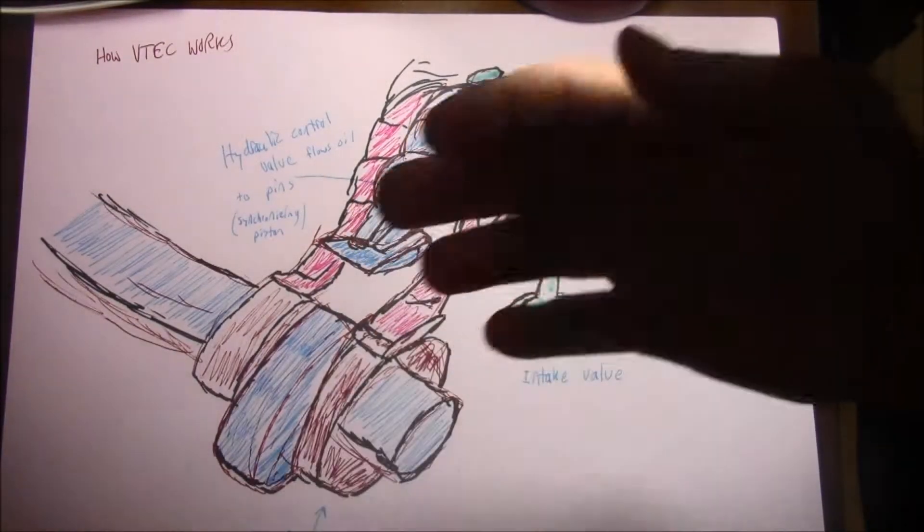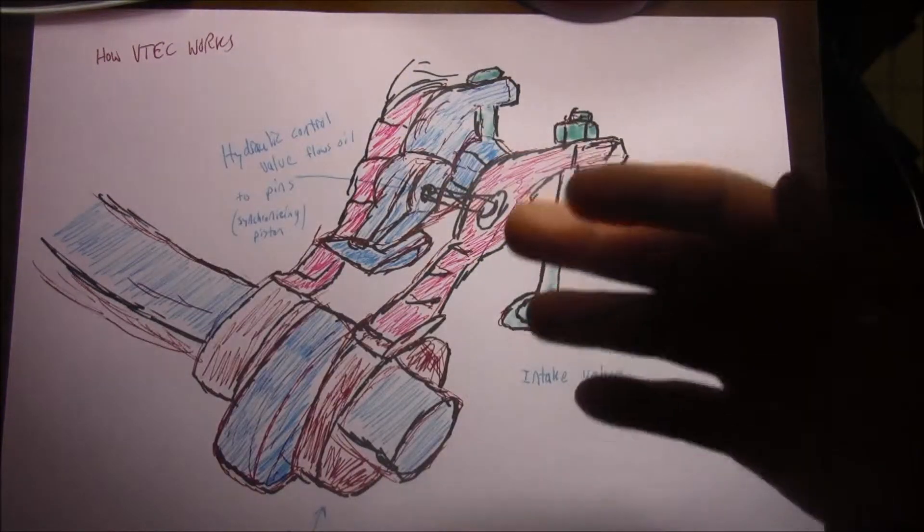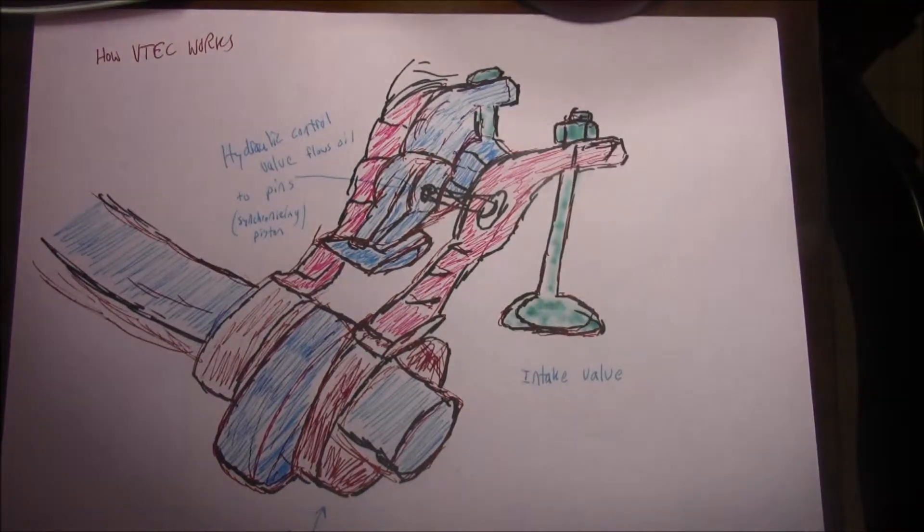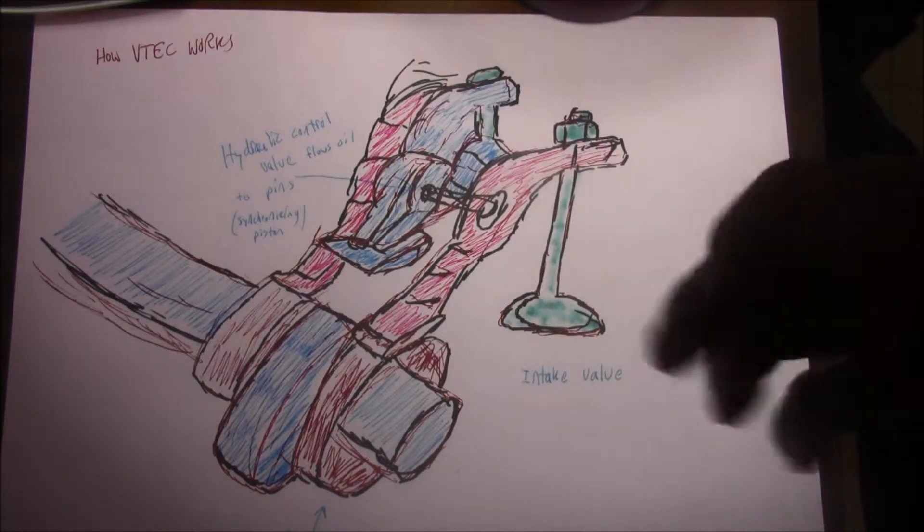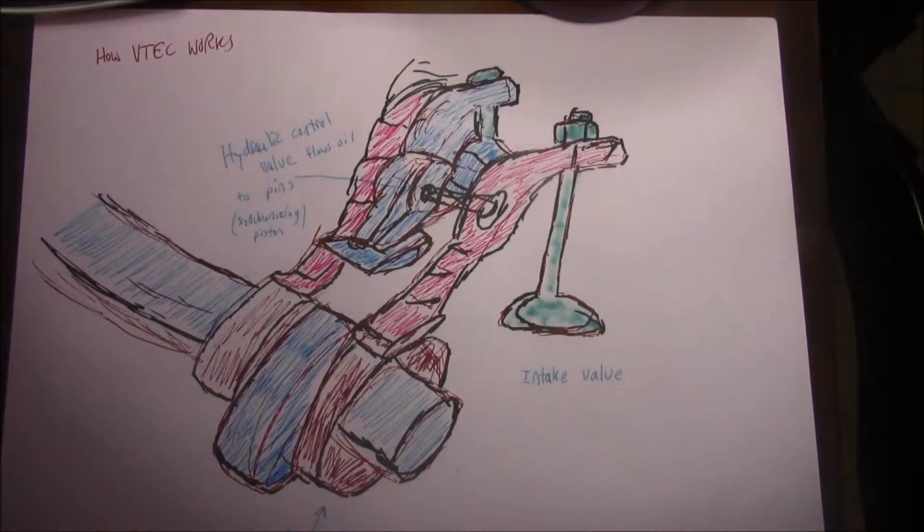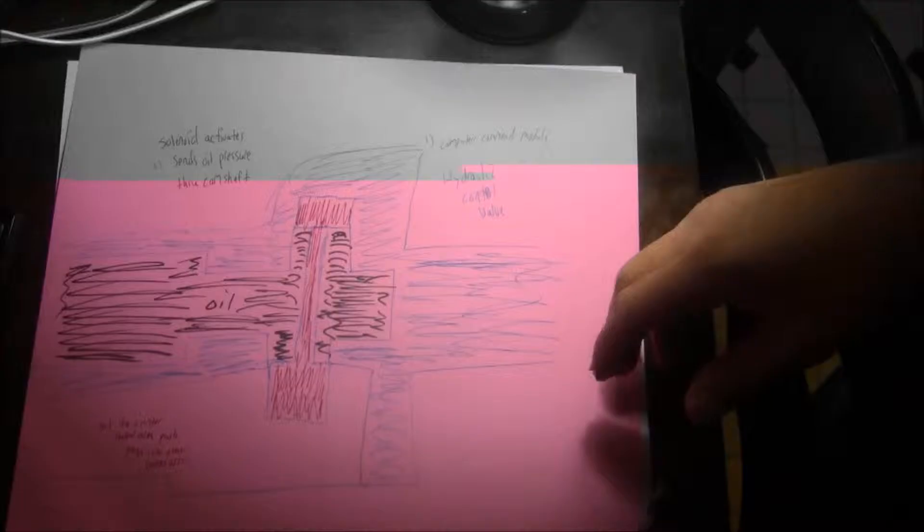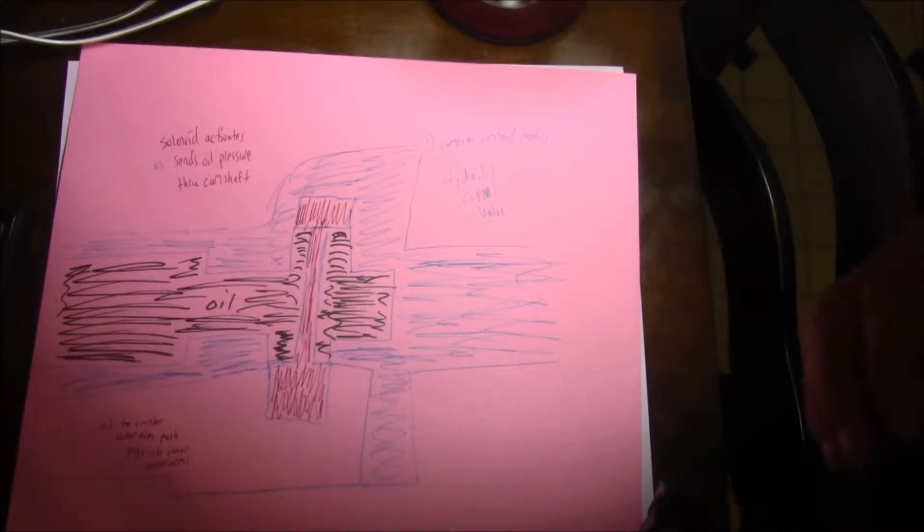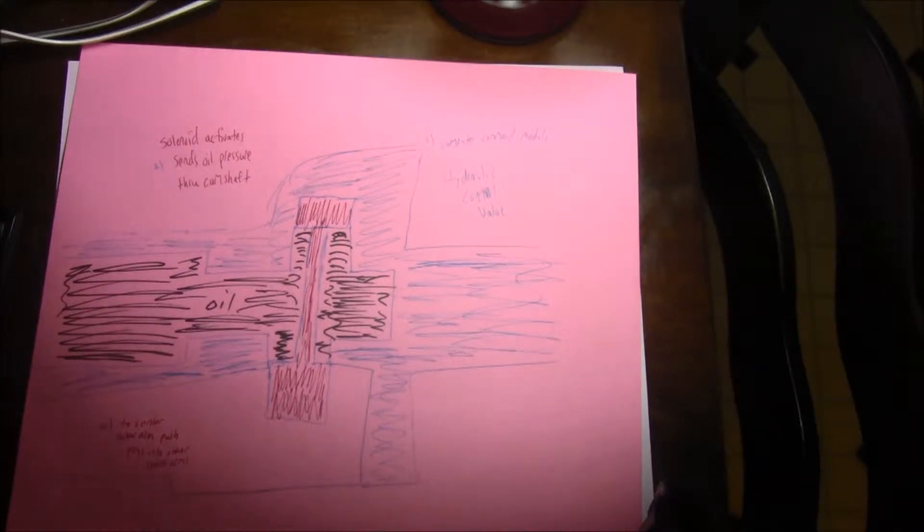When you hit 4,500 RPM and above, the hydraulic control valve—there's a sensor—the solenoid activates and the computer says, 'Hey, VTEC time!' It sends oil pressure through the camshaft.